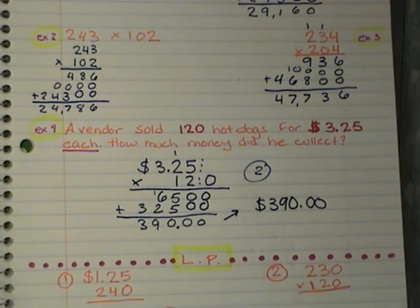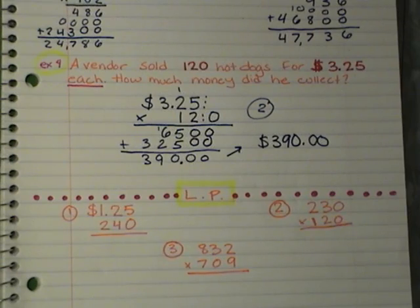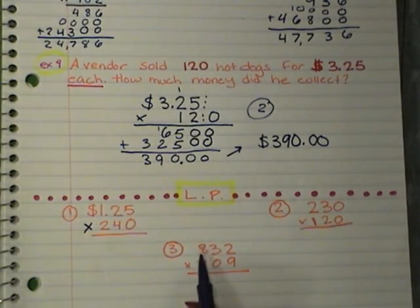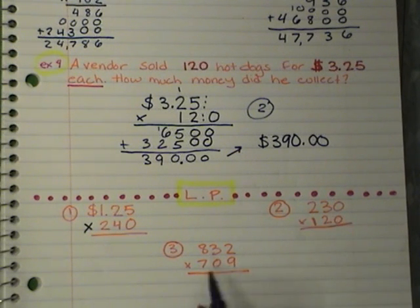Alright, and your lesson practice is right here. You have three problems. The first one is $1.25 times 240. And number 2 is 230 times 120, and 3 is 832 times 709.